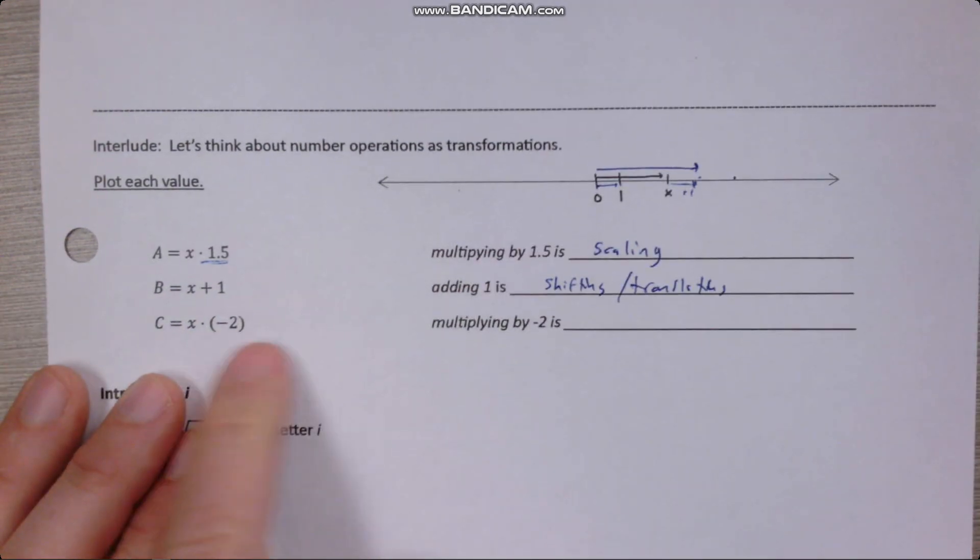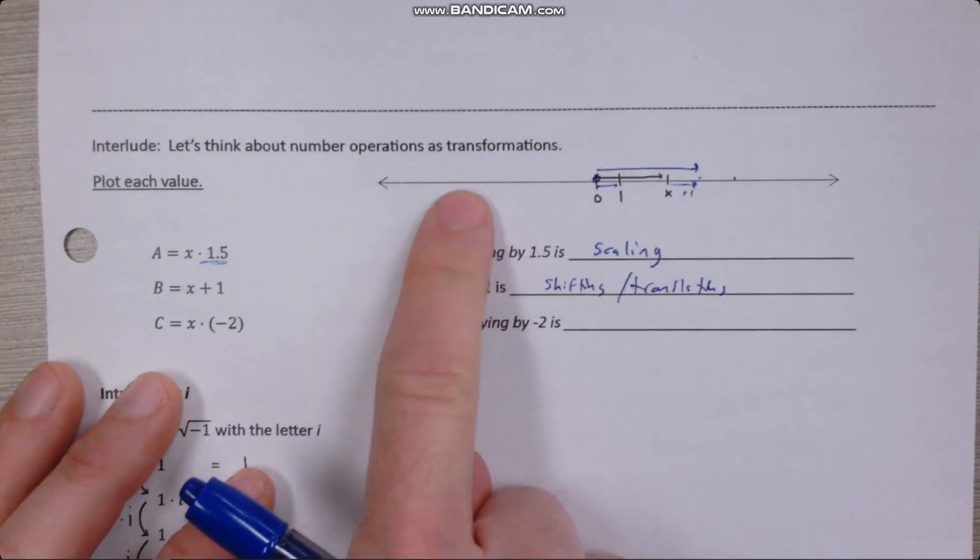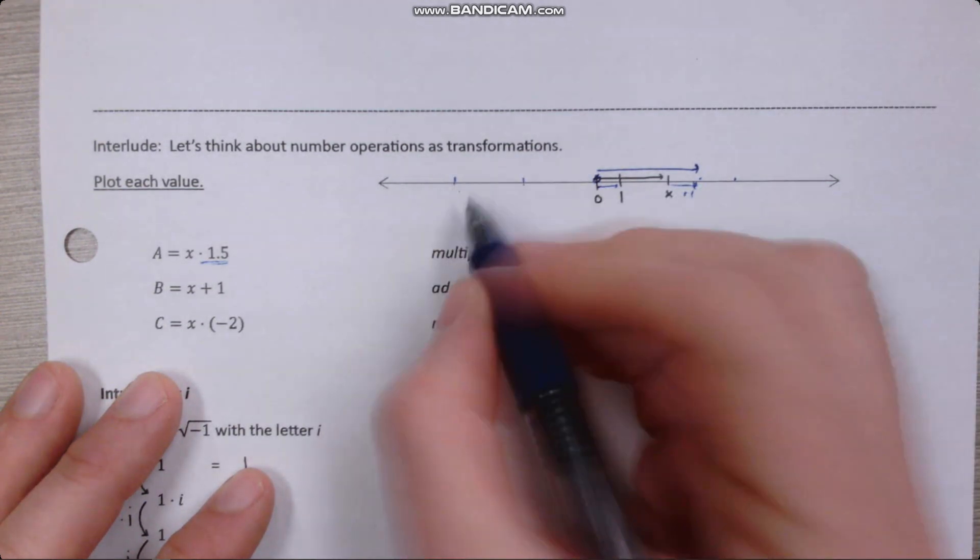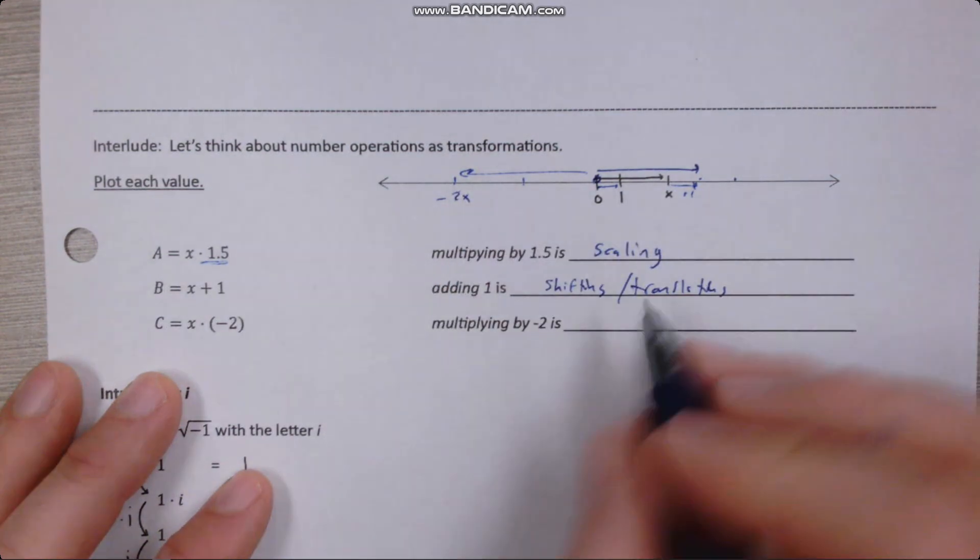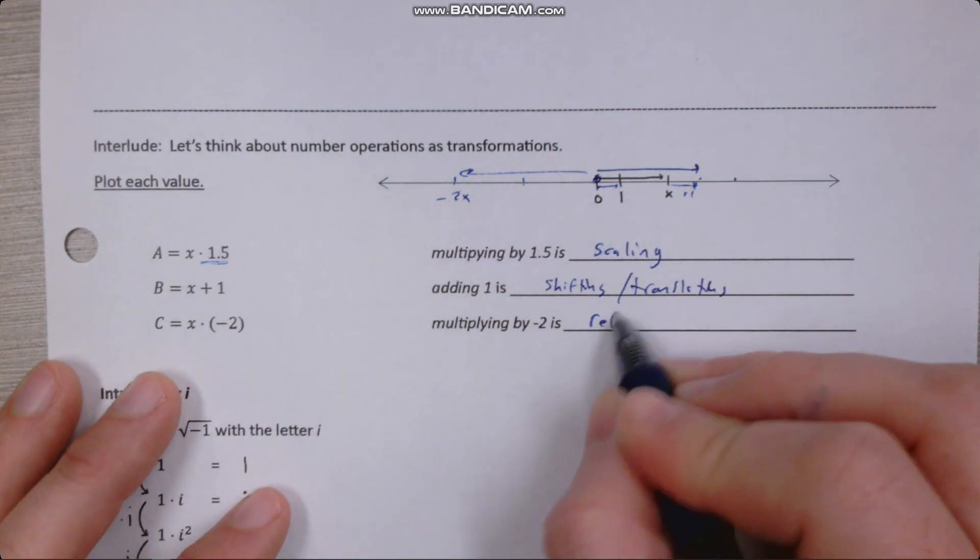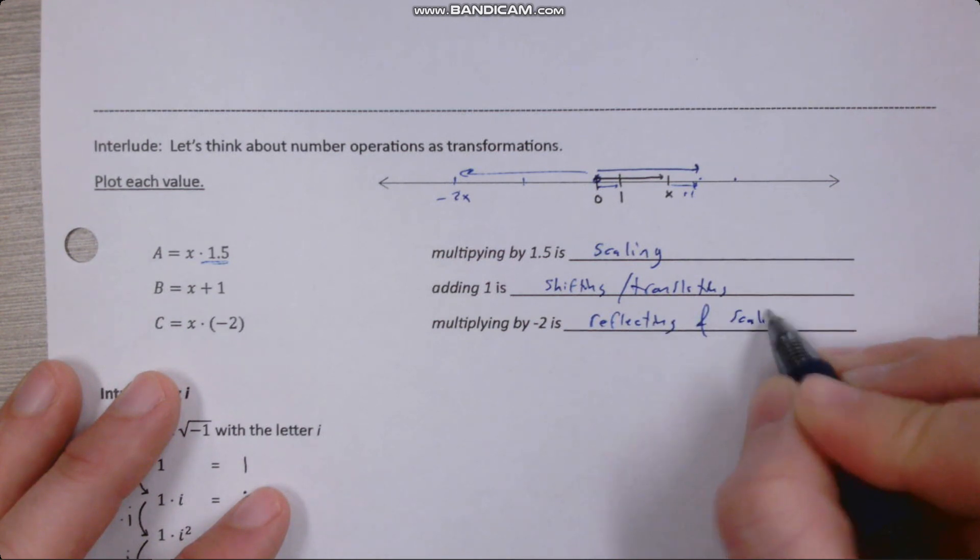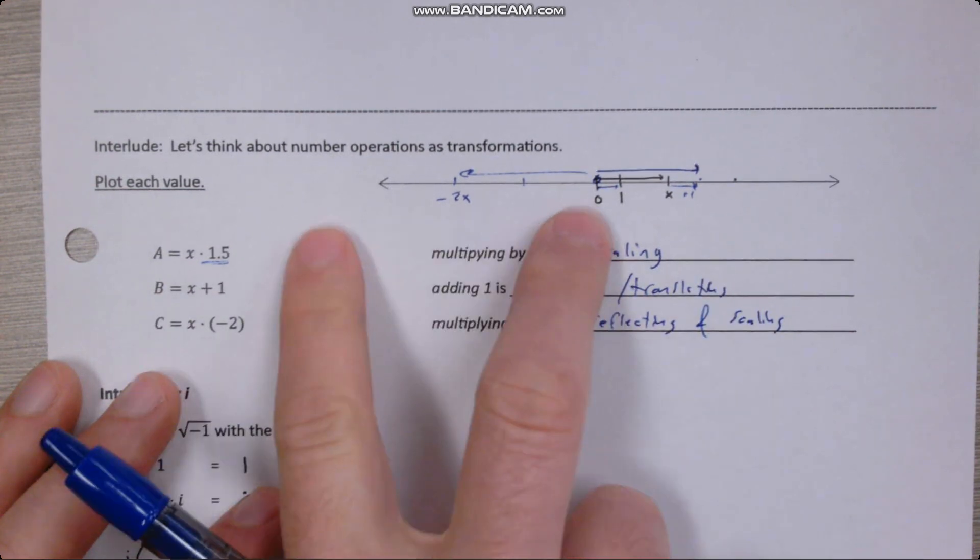What about multiplying by negative two? Well negative two is going to put us over on the left side here, and it's going to be at twice the x distance. So about there is negative two x. And so that is reflecting and scaling also. So I reflected it to be on the negative side, and I stretched it out that way.